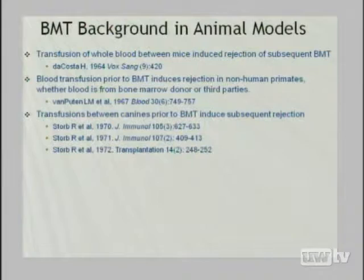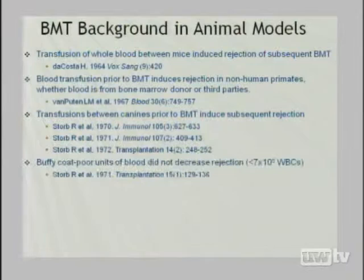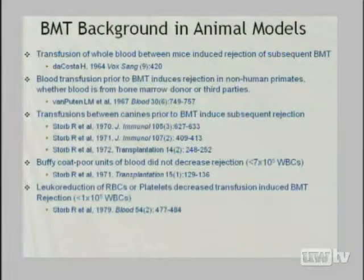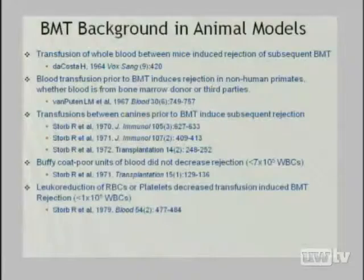Subsequently in canine models — work done here largely by Rainer Storb in collaboration with Cheryl Schlichter — the same phenomenon was demonstrated: if you transfuse dogs before they get a bone marrow transplant, you cause rejection that would not have occurred without the transfusion. This could occur with DLA-identical dogs or third-party unrelated dogs. The same group showed that a crude buffy coat leukoreduction to fewer than 7×10⁵ white blood cells failed to mitigate the phenomenon, but getting down to fewer than 1×10⁵ leukocytes did, suggesting it was at least leukocyte dependent.